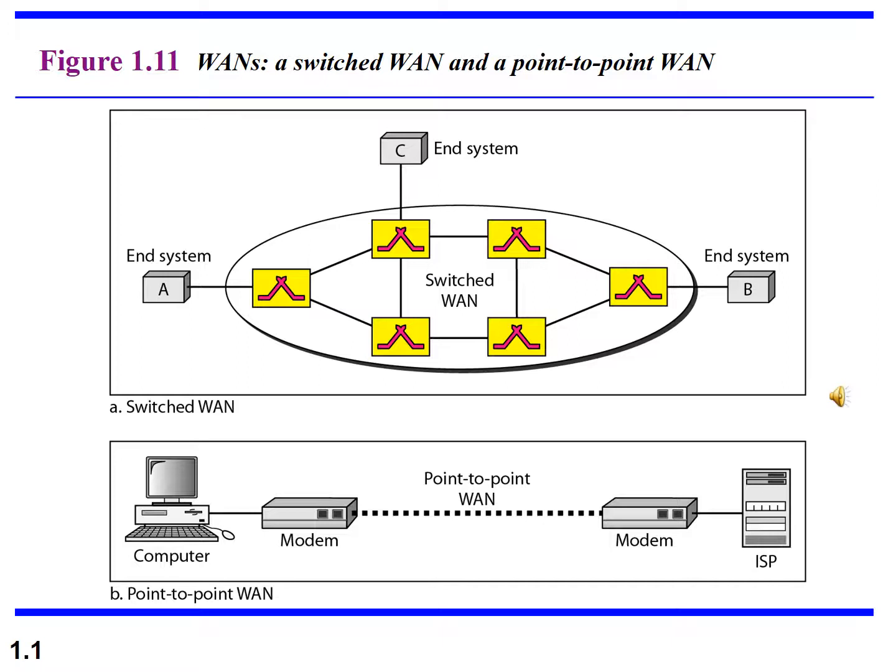Firstly, there are switch WANs, or the inner system, where all the switches are connected. The front systems are connected to the end system. End system means the different communication stations — they are connected through the switch. So the communication stations are connected to the switch, and the switches are connected to the bus bar system, the data bus bar. That's what we call the switch WANs, or the switch Wide Area Network system.